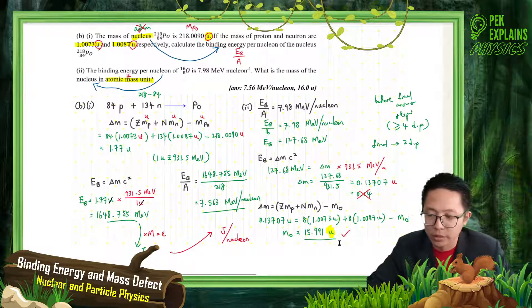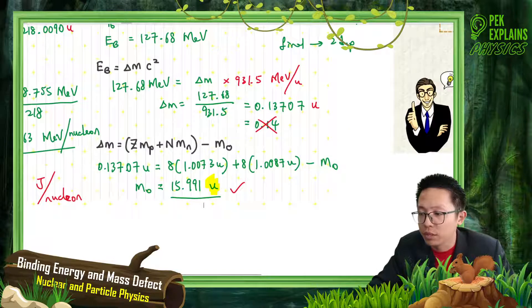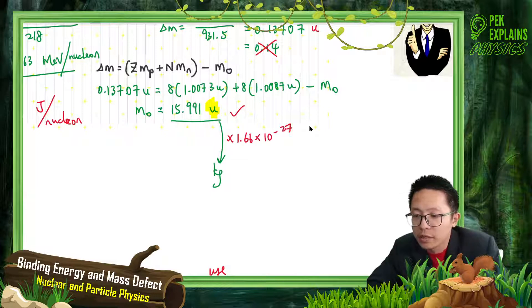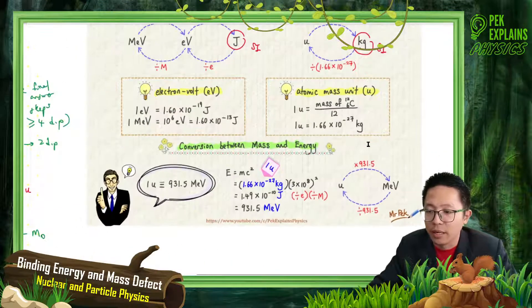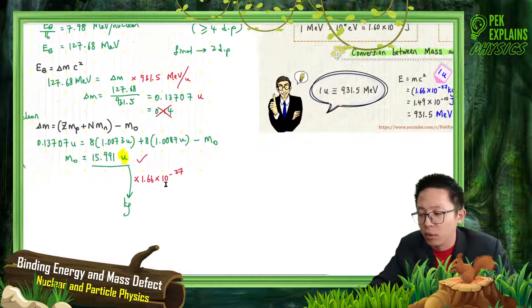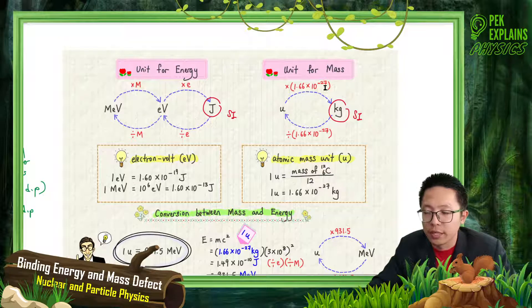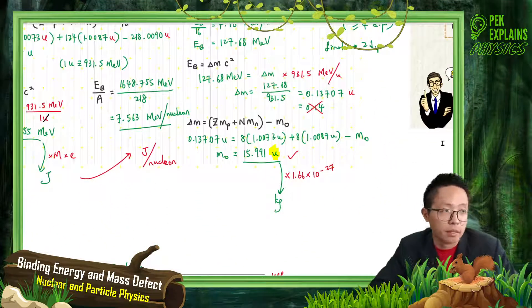If the question asks for the answer in kilograms instead, multiply the atomic mass unit value by 1.66 × 10⁻²⁷ kg to convert. That's all for these questions — the key is knowing how to work both forwards and backwards through the binding energy calculation.